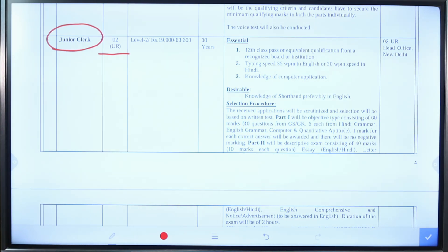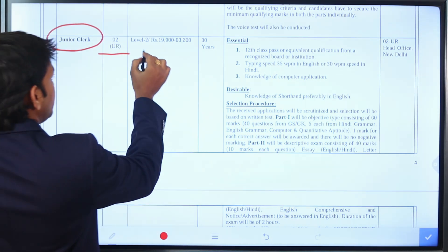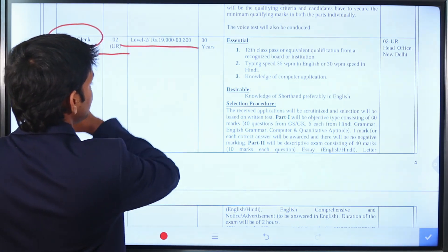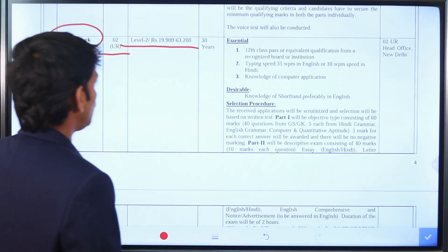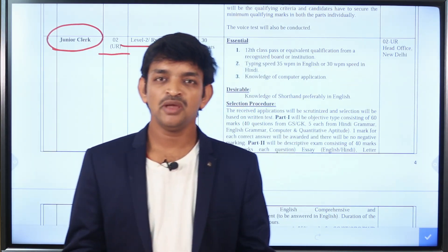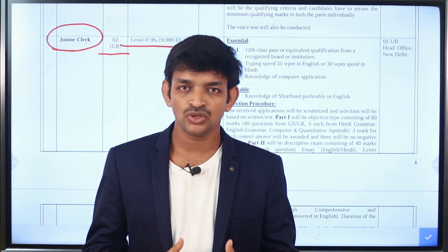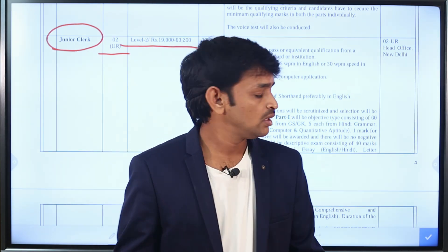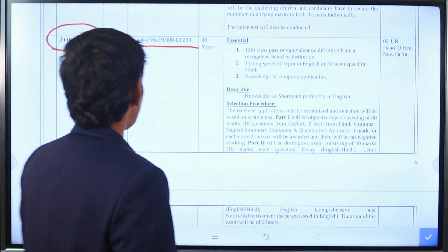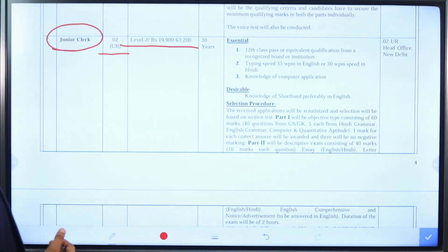Selected candidates will be placed under the Central Government. This is a Level 2 post, with a basic pay of ₹19,900 and a maximum pay of ₹63,200.